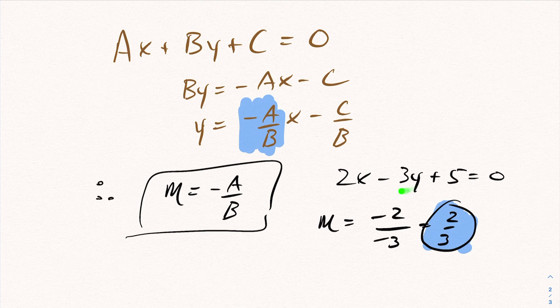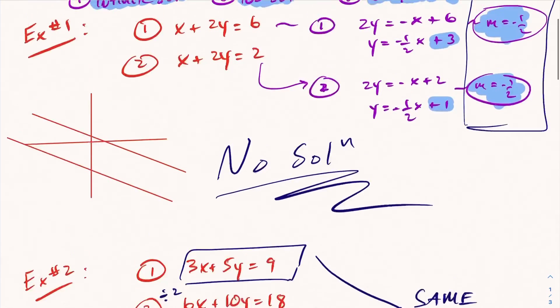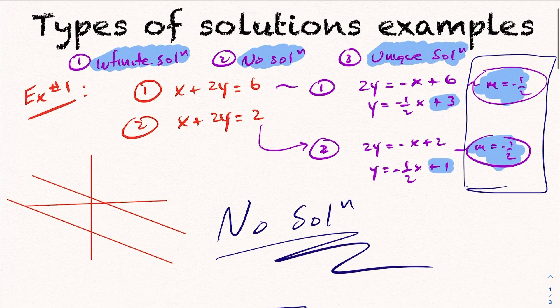So if I do negative A over B, I have to realize A is 2, and B is actually negative 3, giving you your 2 thirds. All right? So that concludes taking a look at types of solutions without having to actually do the solving. Thank you.